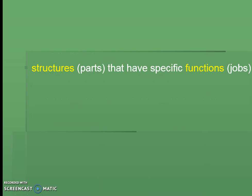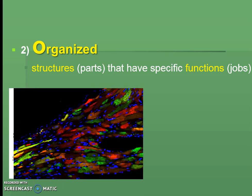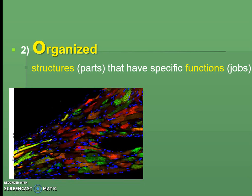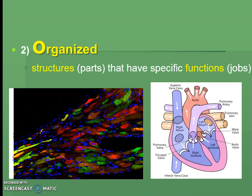Make sure you've filled in the examples for homeostasis. The next letter is O for Organized. The definition is: structures or parts have specific functions or jobs. The example is already filled in for you — heart cells. Heart cells come together and their specific job is to pump blood throughout the body. So parts have specific jobs — that's all 'organized' means. Pause if you need to fill in the definition.